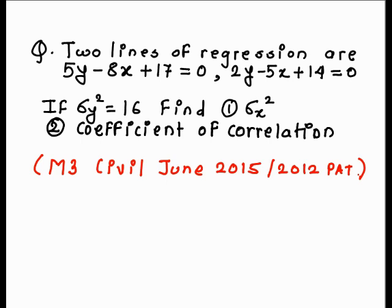This question is asked in Civil Engineering M3 June 2015, 2012 pattern, Pune University. Question: Two lines of regression are 5y minus 8x plus 17 equals 0, and 2y minus 5x plus 14 equals 0. If sigma y square is equal to 16, find sigma x square and coefficient of correlation.